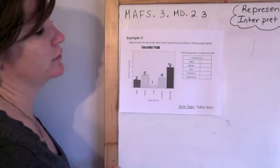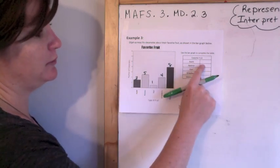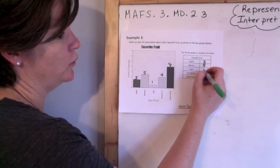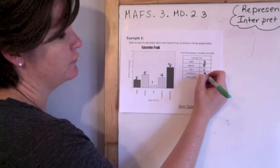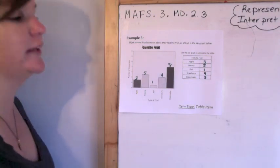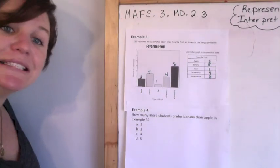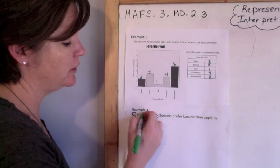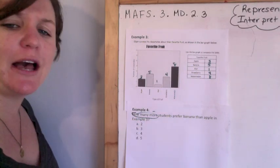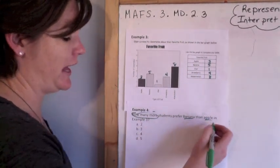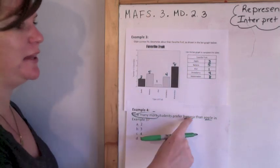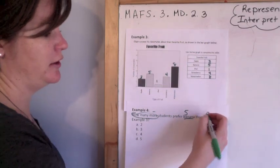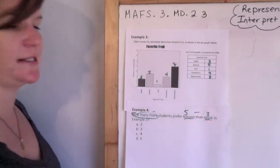So I'm just going to plug it in. How many people like apples? Three. How many people like bananas? Five. One person likes kiwi. Four people like strawberries, and eight people like watermelon. Example four says how many more students prefer banana than apple in example three? So how many people like banana? Five. How many people like apple? Three. And now we subtract them because it says how many more, which would be two.